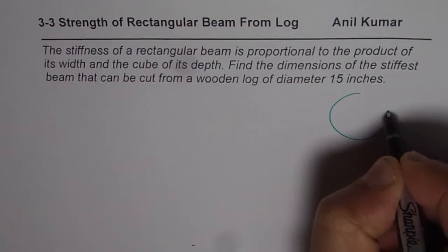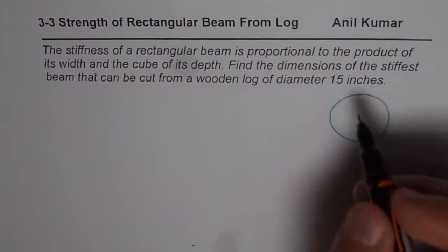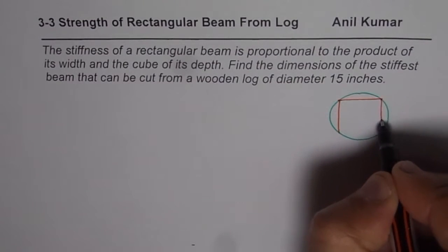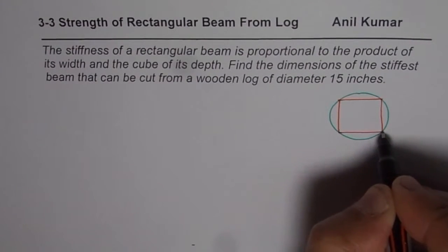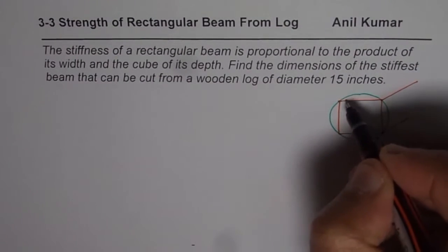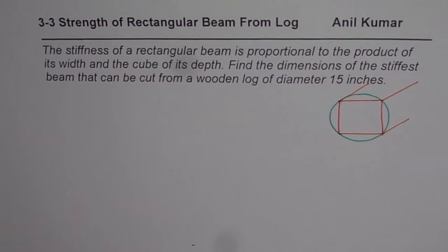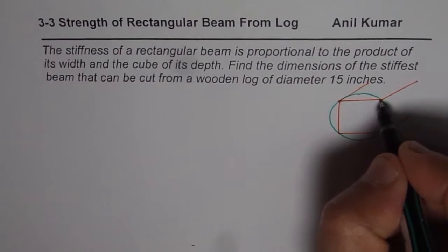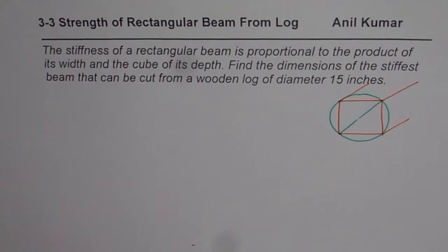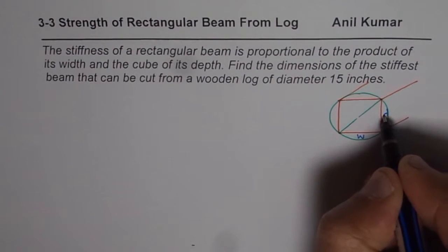Let's say this is a wooden log and that is the circular cross section of the log. We need to cut a beam from this log so that it is most stiff — that beam is what we are talking about. The diameter of this log is 15 inches.